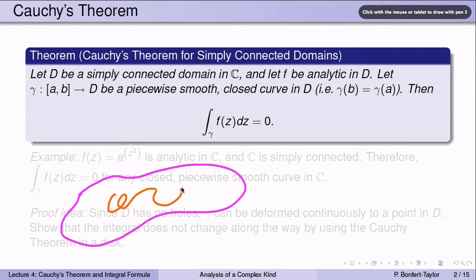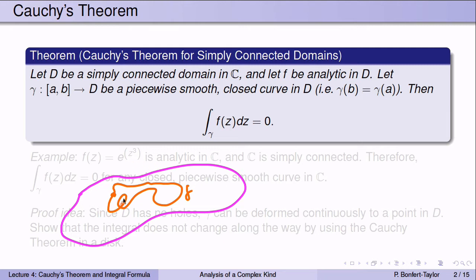Closed means that its initial point coincides with its end point, so it starts and ends at the same point. The claim is that if you integrate this analytic function F over the curve gamma, the integral equals zero.